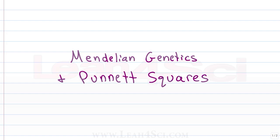Leah here from leah4sci.com. In this MCAT video we're going to look at Mendelian genetics, specifically as it applies to Punnett squares. Say you have a family of plants where some are tall and others are short. Some flowers are blue while others are yellow.